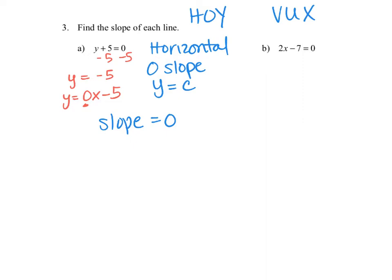For part b, the equation only has an x in it, which means it's a vertical line. Vertical lines have undefined slope, and their equations are written as x equals a constant.